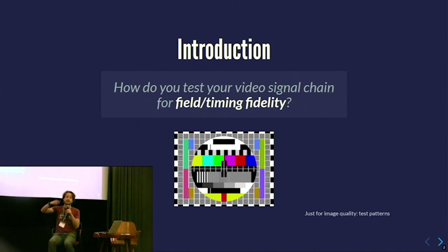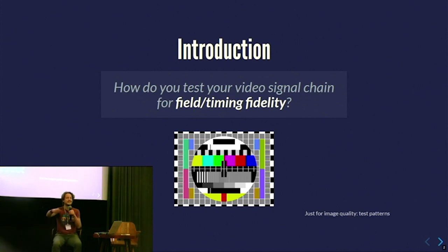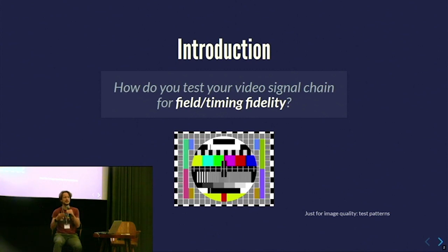So we're testing our setup that we put together ourselves. And suddenly, when recording the video, after 20 minutes, we had two fields stuck together that didn't belong to the same frame. And after 20 more minutes, another field was inserted, and then the sequence was okay again.